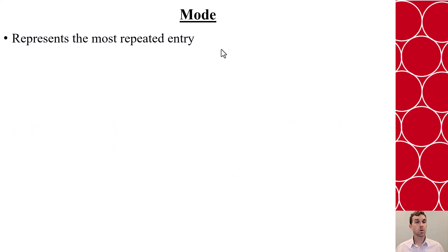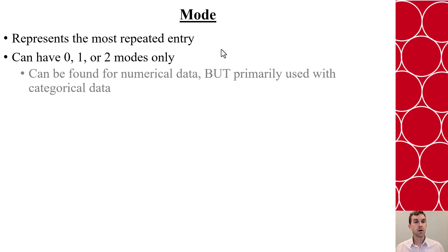Now the mode represents the most repeated entry in our data set. Most commonly this is used for categorical data, but it can be occasionally used for numerical data. When we talk about a mode, you can have no mode, you can have one mode, or a set could be bimodal. If there's more than two, we say there is no mode.